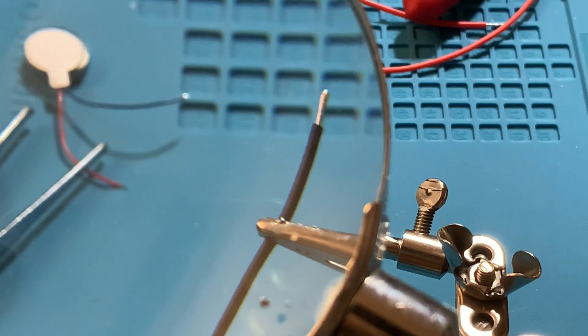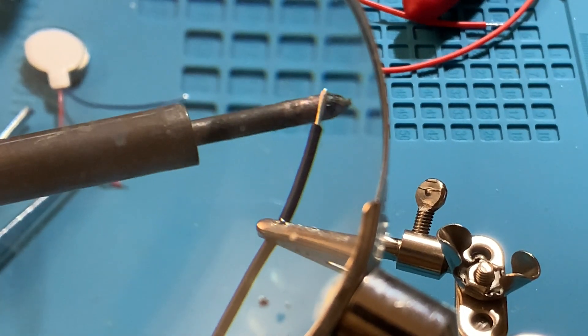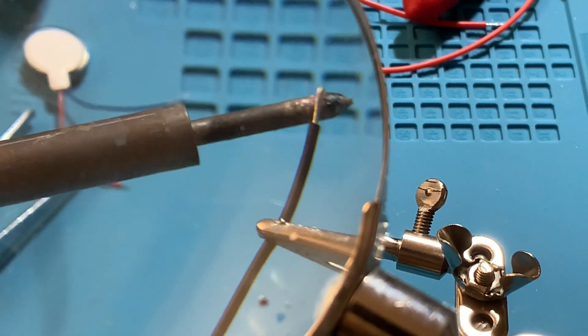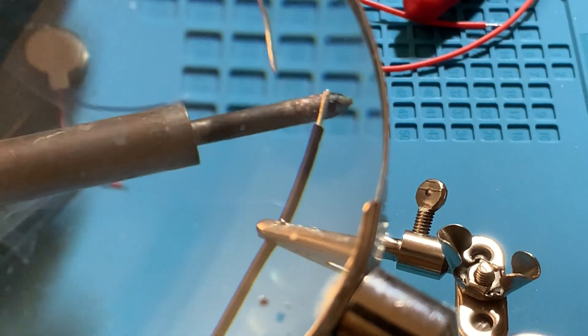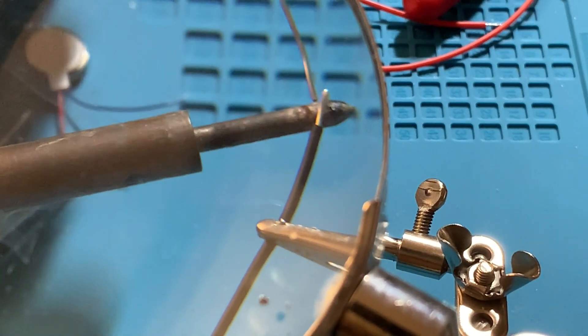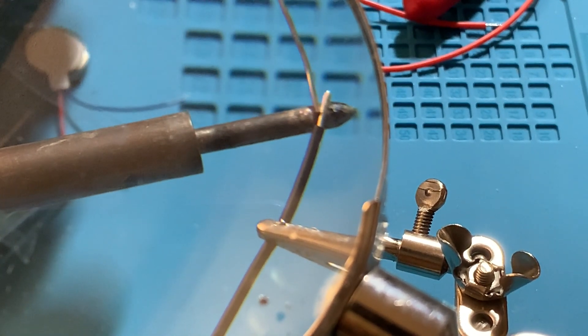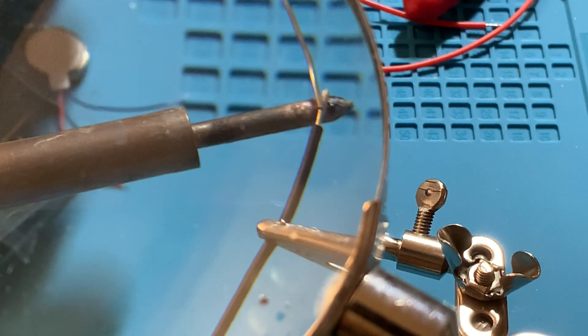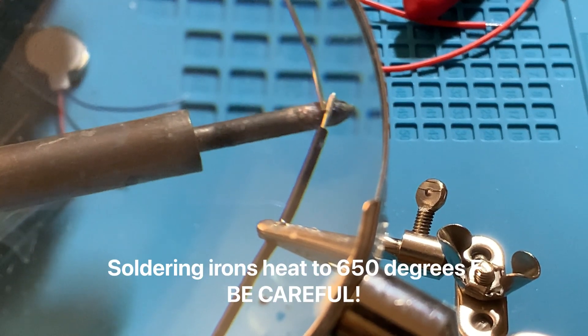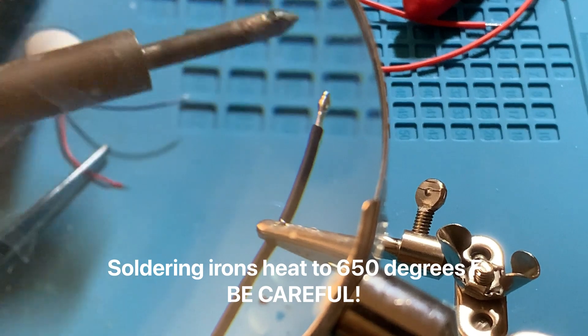All I'm going to do is hold the soldering iron against the bottom of the wire. And I'm going to hold the solder up against the top until I see the solder melt onto the wire.